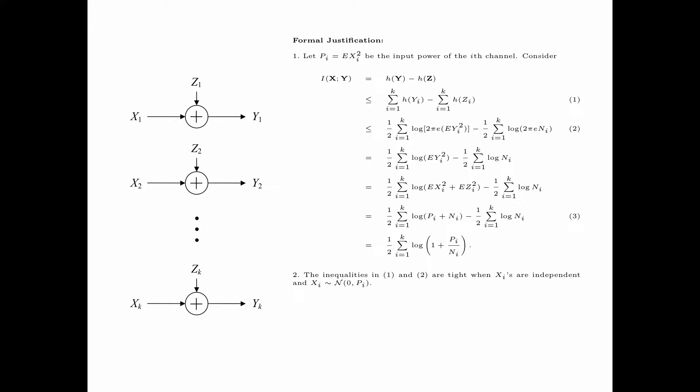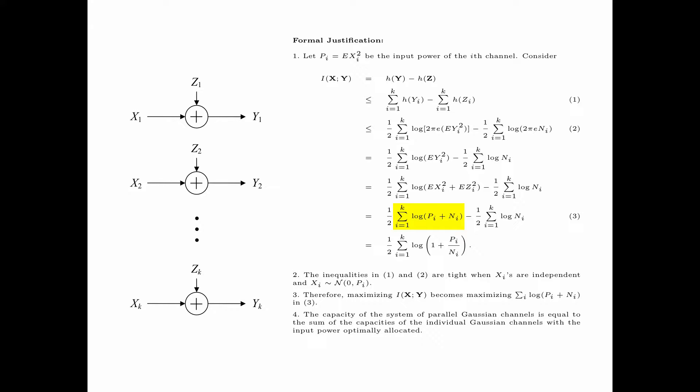Note that inequality 1 is tight when the input random variables xi are independent, and inequality 2 is tight when xi is the Gaussian random variable with mean 0 and variance pi. Therefore, the maximization of I(x;y) becomes the maximization of the summation i of log of pi plus ni in equation 3. In summary, the capacity of the system of parallel Gaussian channels is equal to the sum of the capacities of the individual Gaussian channels with the input power optimally allocated.